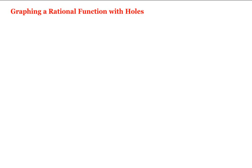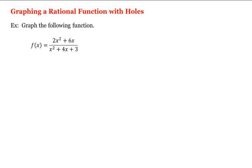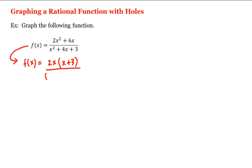Let's look at graphing a rational function with holes. For example, let's graph this function here. Let's first factor to see if f is in simplest form. We have f(x) equal to — we can factor a 2x out of the numerator, which gives us 2x times (x+3), and the denominator factors into (x+1) times (x+3).